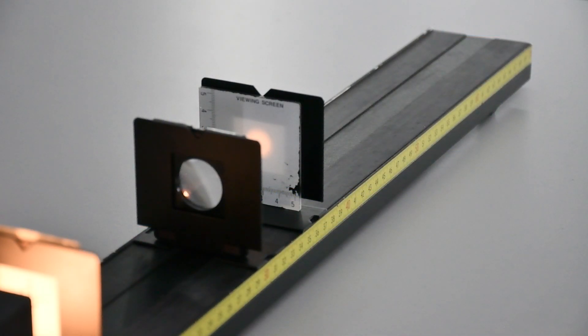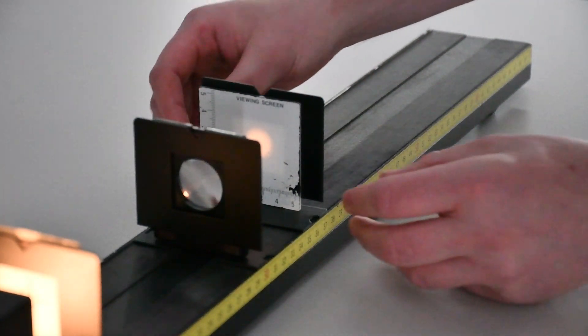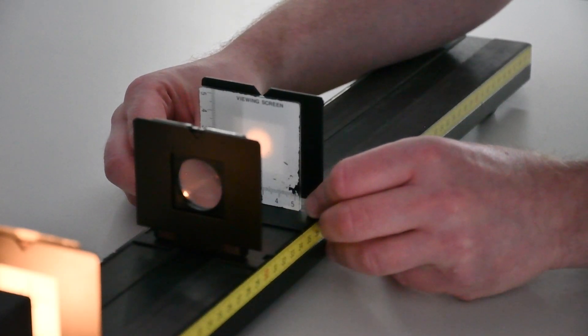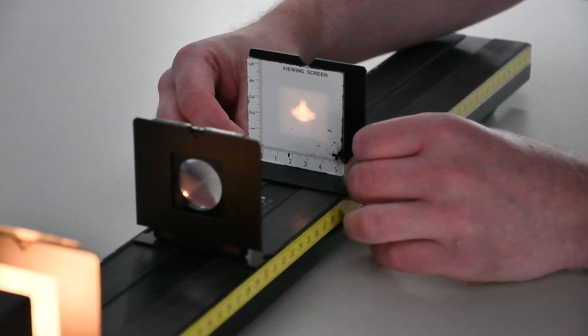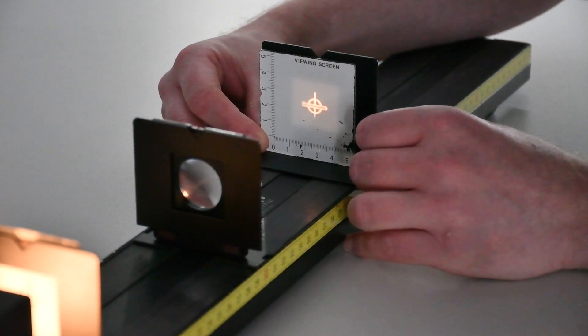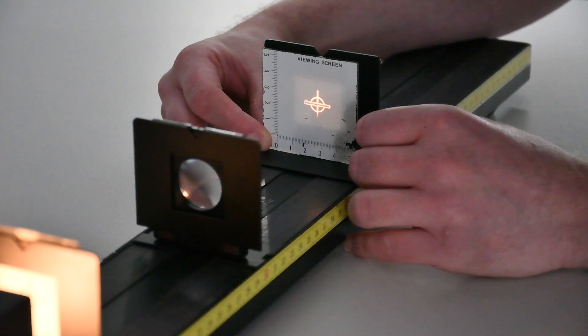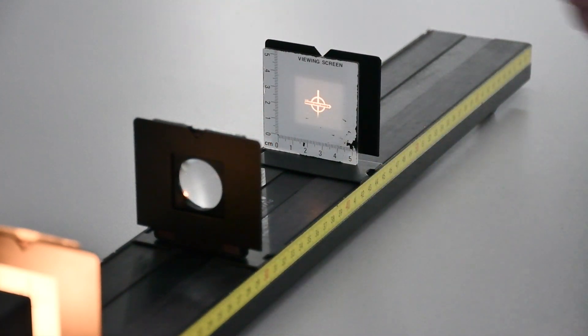To determine a second value for F, I've changed the object distance, this time it's 15cm. I'll now adjust the position of the screen until we determine a sharp image. We can now record new values for U and V and determine a second value for F.